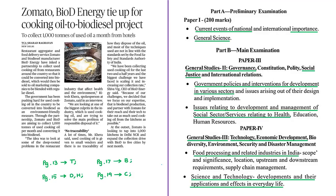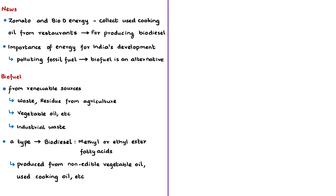Moving on to the next news article discussion, this is based on the production of biodiesel from cooking oil. The news article talks about a joint initiative between the food delivery service Zomato and biodiesel manufacturer Bio D Energy to collect used cooking oil from restaurants in India and convert it into biodiesel. The biodiesel can then be sold to oil marketing companies so that it can be blended with regular diesel.